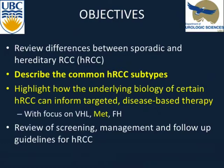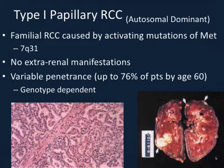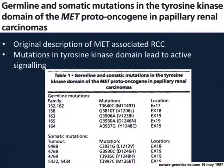The next subtype is type 1 papillary RCC, characterized by a mutation in MET. Again, autosomal dominant. This familial RCC is caused by activating mutations of the MET gene, found on chromosome 7. It tends not to have extra-renal manifestations, although that's debated — the classic teaching is it does not. There's variable penetrance, but generally by age 60 the majority of patients will manifest at least one tumour. Many are watched to a threshold size, especially in type 1, which seems to be the most indolent of the familial types.